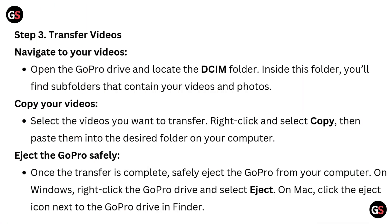Step 3: Transfer videos. Navigate to your videos by opening the GoPro drive and locating the DCIM folder. Inside the folder, you will find subfolders that contain your videos and photos. Select the videos you want to transfer, right-click and select Copy, then paste them into the desired folder on your computer.